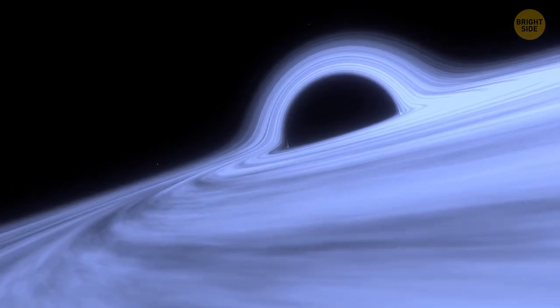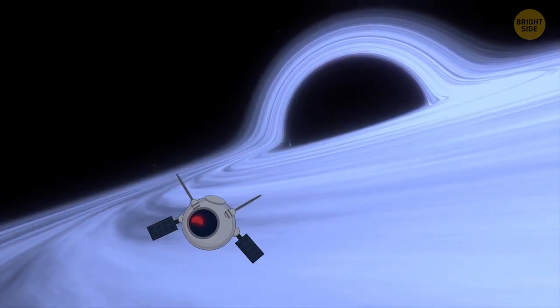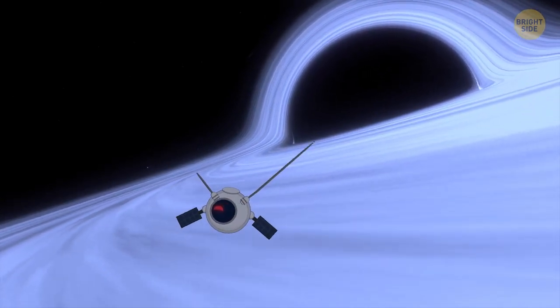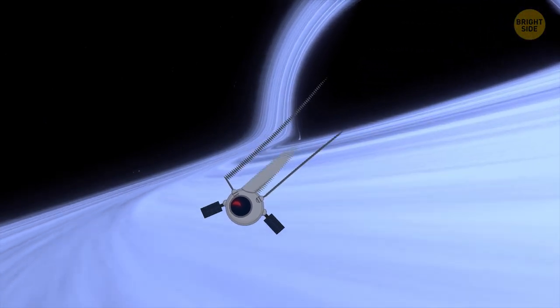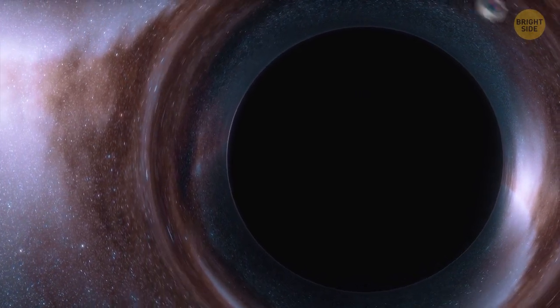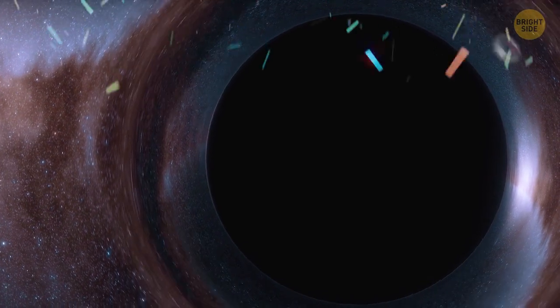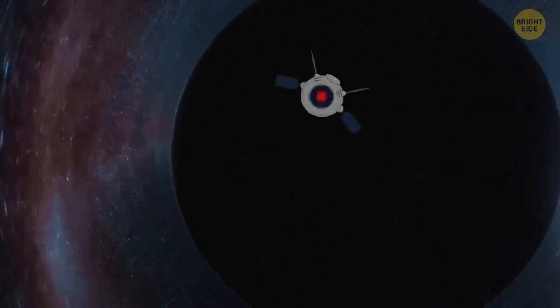But our goal is the singularity. And we guide the drone closer to the event horizon. After a few minutes, the force of attraction begins to strengthen, and the drone starts to stretch like spaghetti. When it begins spinning around the black disk, it means it has reached the event horizon and has started its descent into the black abyss. Now, let's look at everything from the drone's perspective.